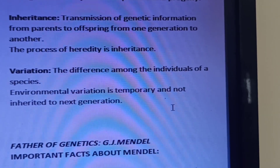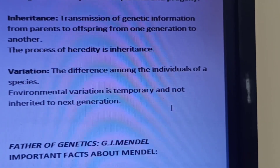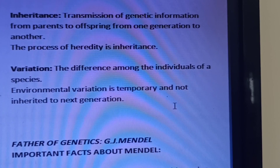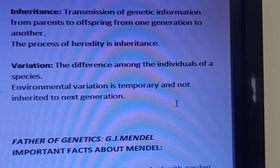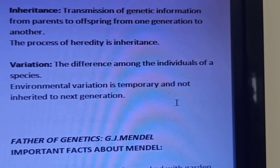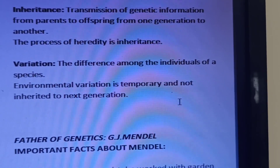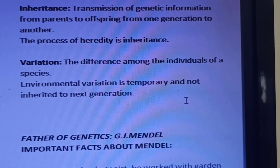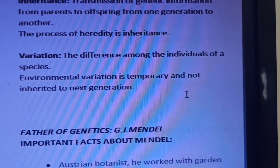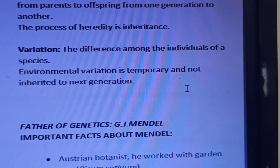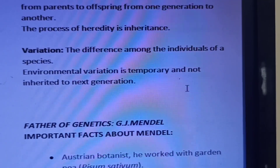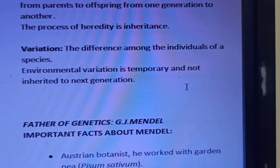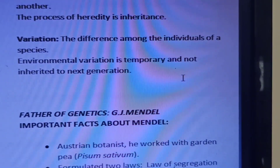We all know that because of variation only, we identify differences among persons. Environmental variation is temporary and will not be transmitted to the next generation — that is very important. The father of genetics is Gregor Johann Mendel. After his death only, his findings were reorganized and everyone agreed they were true.